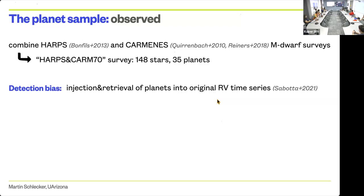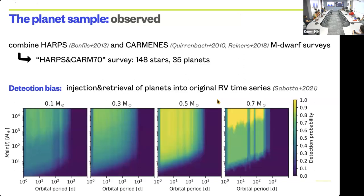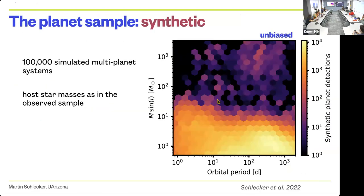We injected planetary signals into the raw radial velocity measurements to generate sensitivity maps in orbital period versus minimum mass space—the probability that you would detect a planet living in a region of that parameter space. Before applying detection bias, we see what the M dwarf Bern model produces: more than 2 million planets, with mostly small mass planets and ~100-day orbital periods. We do have the first question—yes, Sebastian.